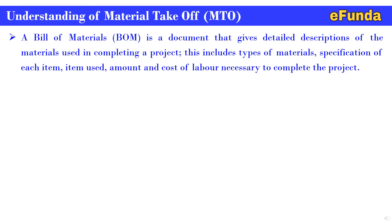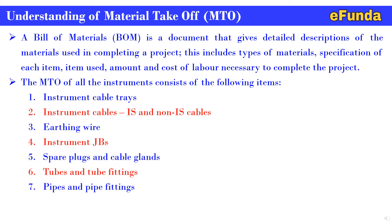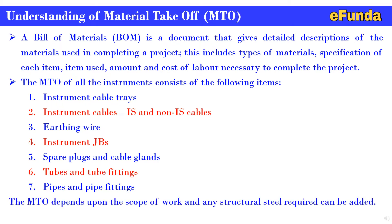Procurement and requisition activities are started only after the Bill of Material is completed. A Bill of Material is a document that gives detailed descriptions of the material used in completing a project. This includes type of material, specification of each item, amount used, and cost of labor necessary to complete the project. The MTO for all instruments consists of: instrument cable trays, instrument cables (IS and non-IS), earthing wire, instrument junction boxes, pair plugs and cable glands, tubes and tube fittings, and pipe and pipe fittings.